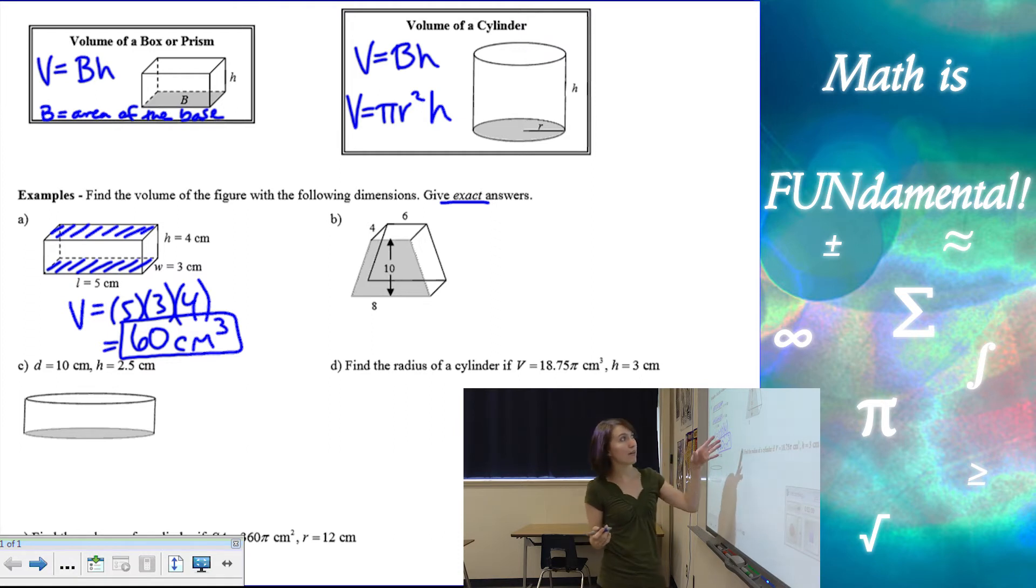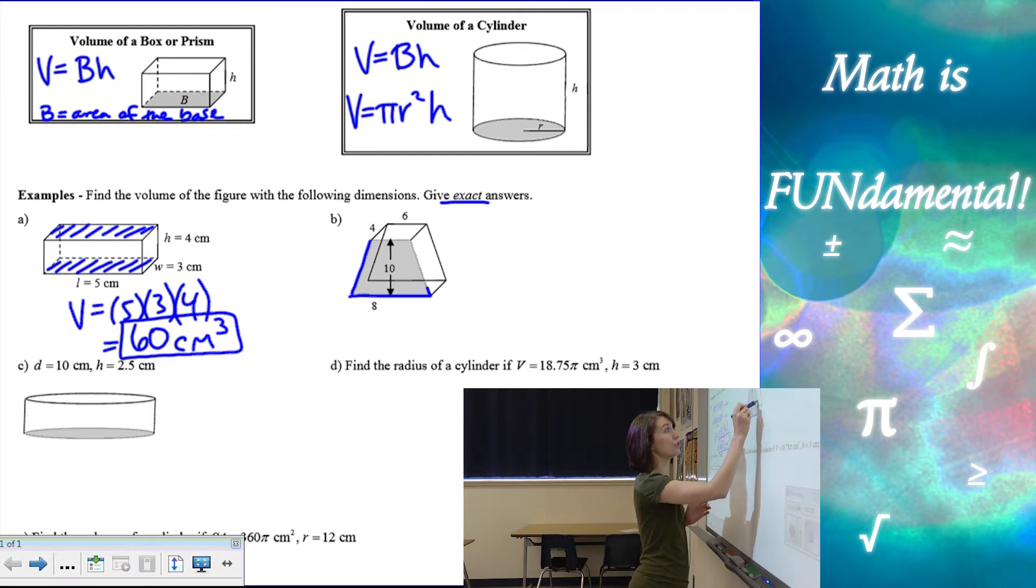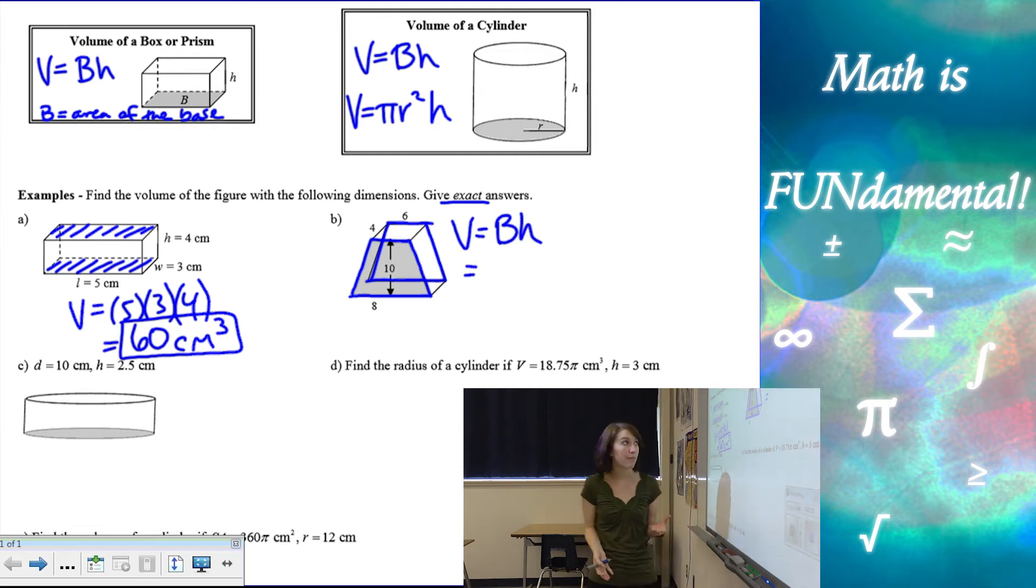Now look at the second example. This is what we call a trapezoidal prism because the bases are trapezoids. And if you notice, the bases are not the top and bottom. You really have to look for which shapes are congruent and parallel to each other. And the only two shapes that are congruent and parallel to each other are the two trapezoids. We have this one here and this one in the back. So those are the two bases.